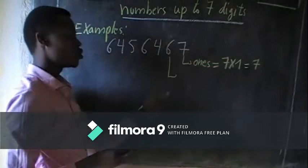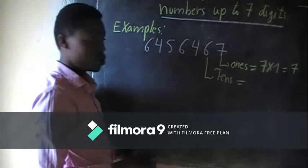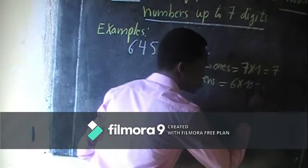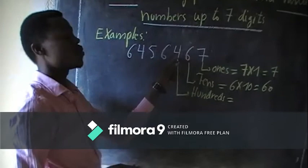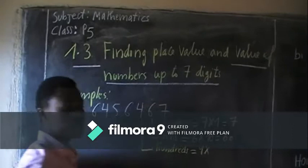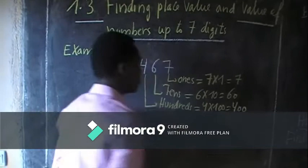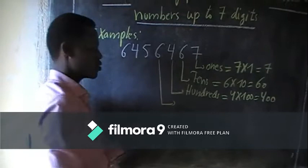Next, two — this is the tens place. To get the value, I am going to take six times its place value, which is ten. So six times ten gives us sixty. Next is hundreds. The place value of this four is hundreds. I am going to take four times its place value, one hundred. That gives us four hundred.